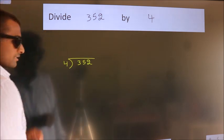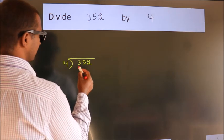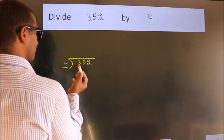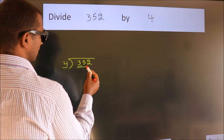This is your step 1. Next. Here we have 3, here 4. 3 is smaller than 4, so we should take 2 numbers: 35.